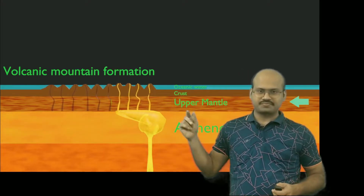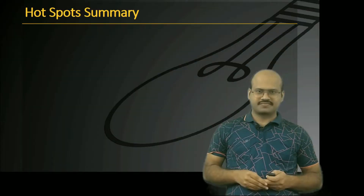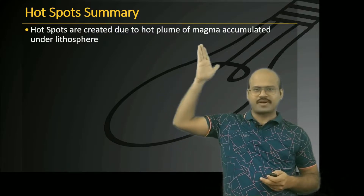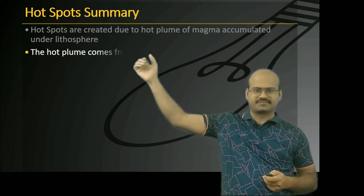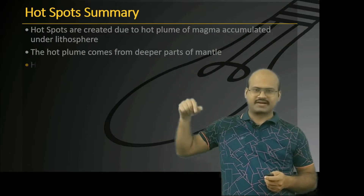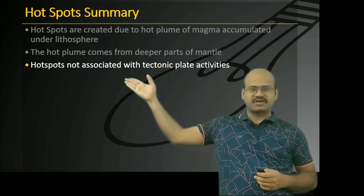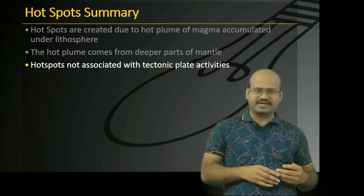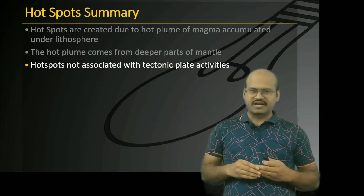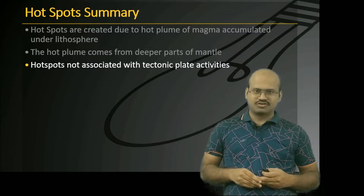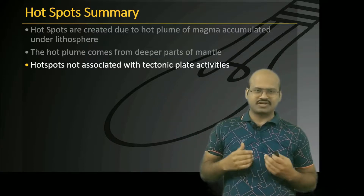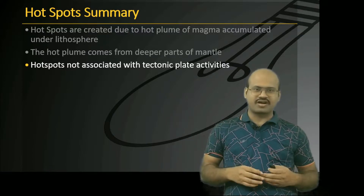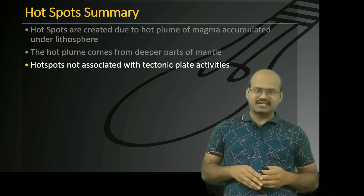Because the tectonic plate is continuously in motion, a chain of volcanic mountains is formed. To summarize: hotspots are created due to a hot plume of magma accumulated in the lithosphere. The hot plume comes from deeper parts of the mantle. Hotspots are not associated with tectonic activities; they can exist far away from tectonic boundaries and could be active for several thousands or hundreds of thousands of years, remaining stationary at one point.